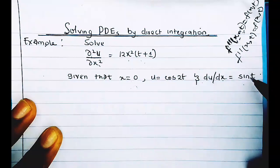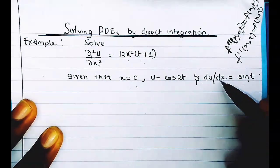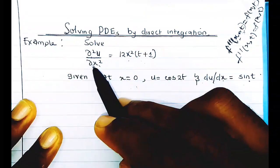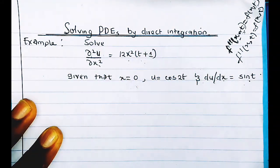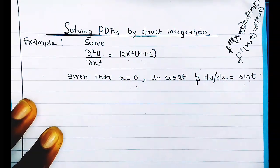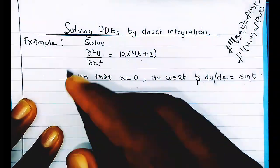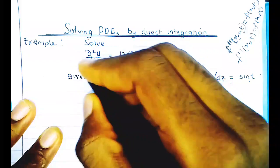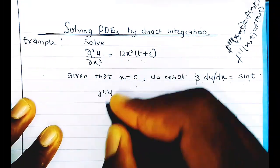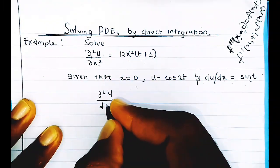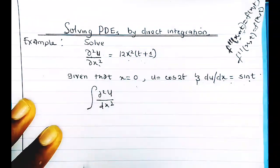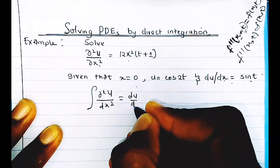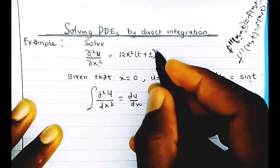Looking at the conditions, we are given du/dx = sin(t). This du/dx is obtained from integrating d²u/dx². Remember, when you integrate a derivative, it reduces the order. So integrating d²u/dx² gives us du/dx.